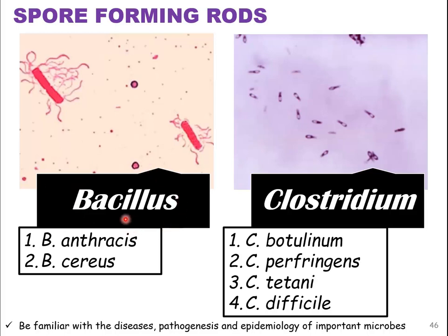There are two disease-causing agents: Bacillus anthracis and Bacillus cereus. The other genus we're going to discuss is Clostridium: Clostridium botulinum, Clostridium perfringens, Clostridium tetani, and Clostridium difficile.